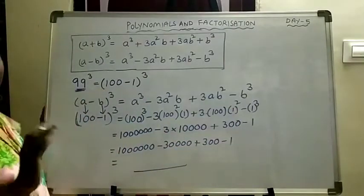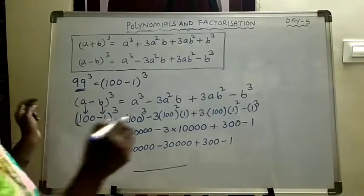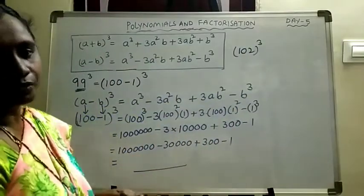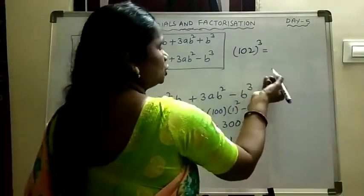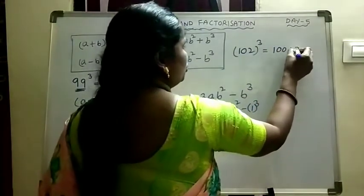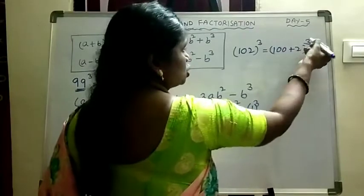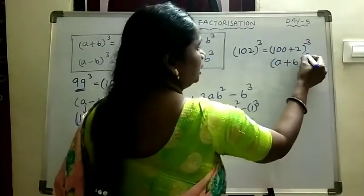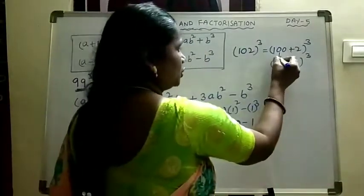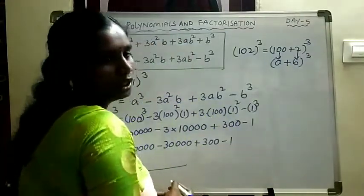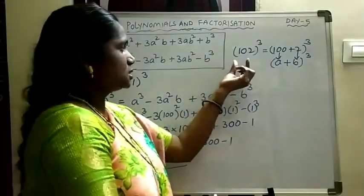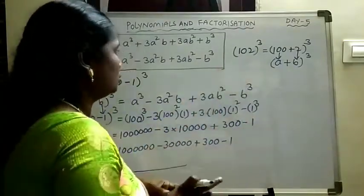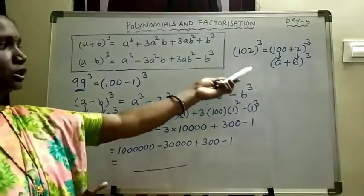Similarly, for 102³, since 102 is 2 more than 100, write it as (100+2)³, which is in the form (a+b)³ with a=100, b=2. You have to check whether the given number is near to tens, hundreds, or thousands.